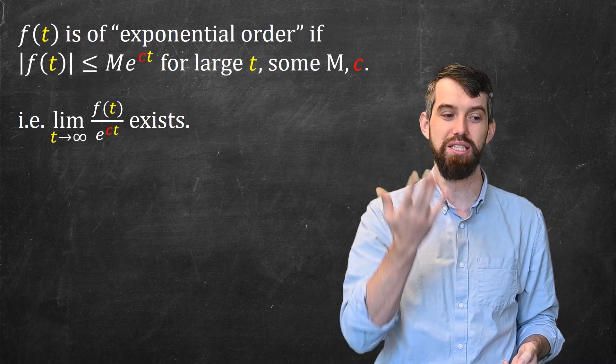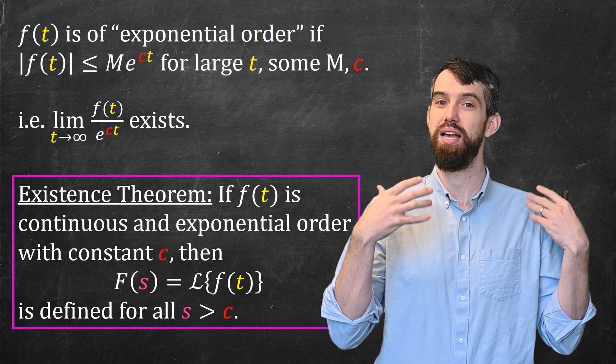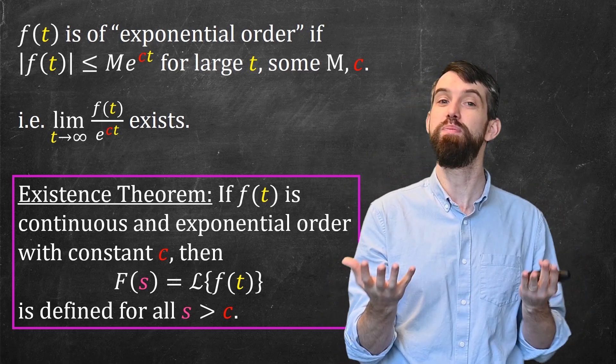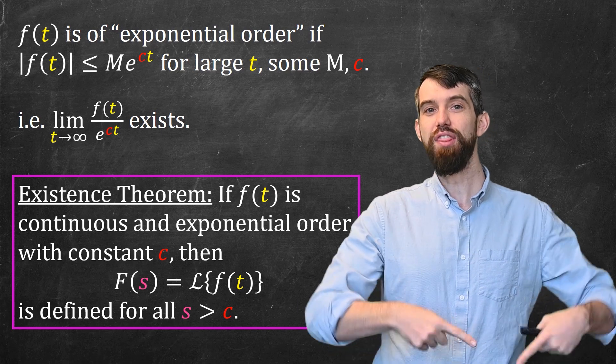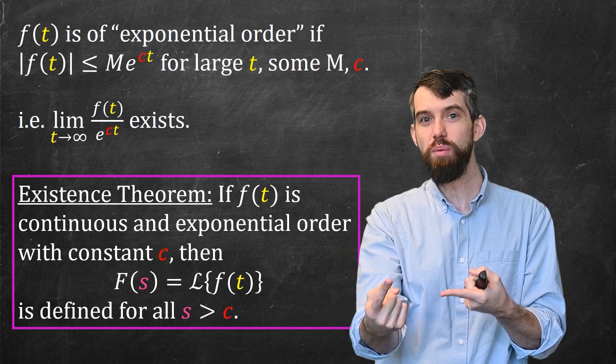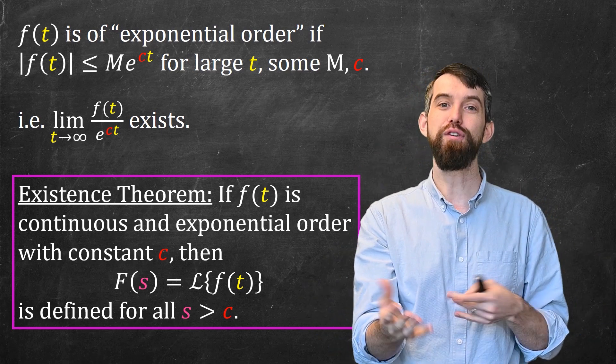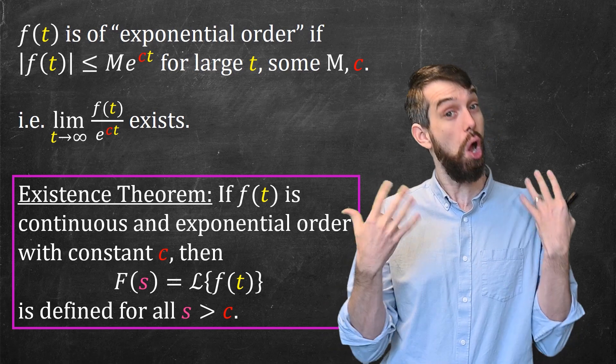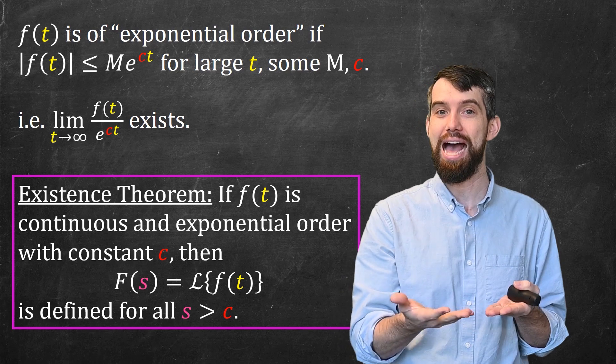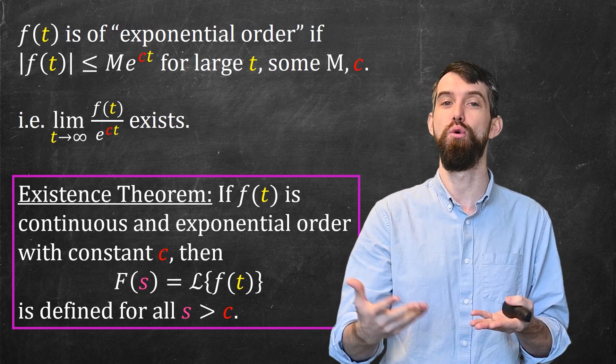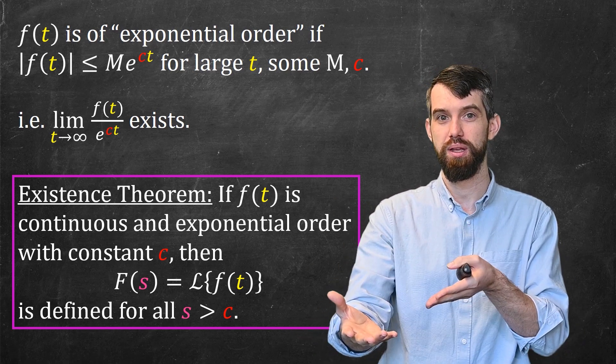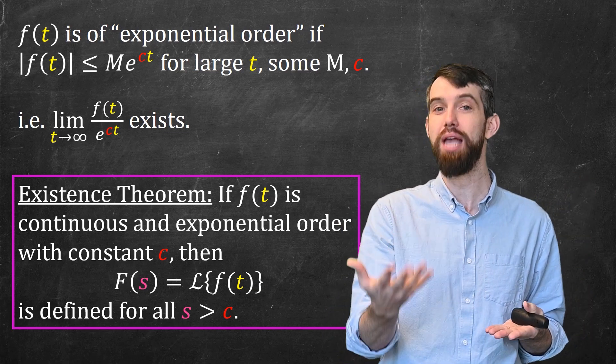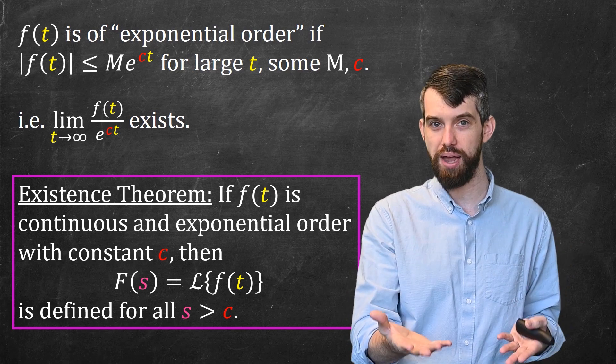What I mean more precisely is the following claim. This is my existence theorem. It says that if you have some function that's continuous with exponential order, then that Laplace transform is defined for all values of s that are bigger than c, where c is the constant that the function has when it is of exponential order with constant c. So under those conditions, where your function is nice enough, you get a Laplace transform defined.